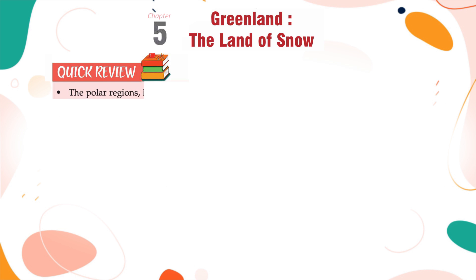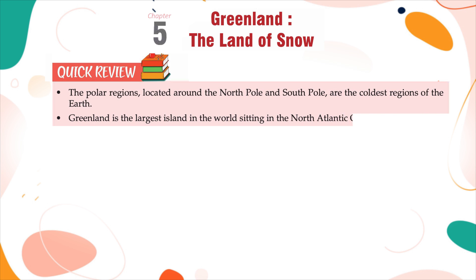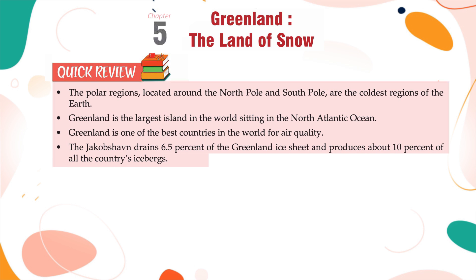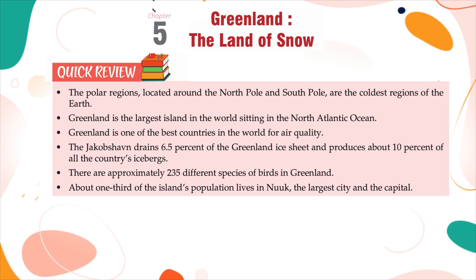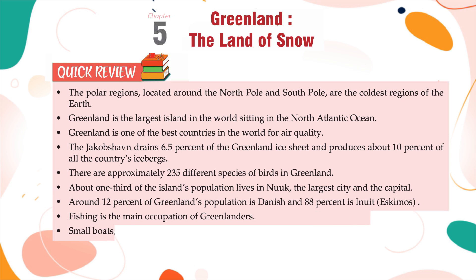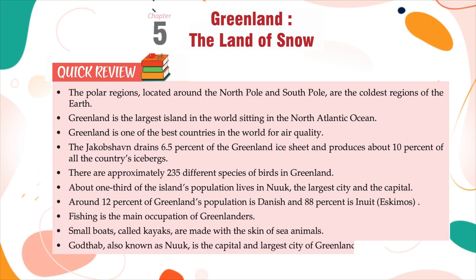Quick Review: The polar regions located around the North Pole and South Pole are the coldest regions of the Earth. Greenland is the largest island in the world, sitting in the North Atlantic Ocean. Greenland is one of the best countries in the world for air quality. The Jakobshavn Glacier drains 6.5% of the Greenland ice sheet and produces about 10% of all the country's icebergs. There are approximately 235 different species of birds in Greenland. About one-third of the island's population lives in Nuuk, the capital. Around 12% of Greenland's population is Danish and 88% is Inuit (Eskimos). Fishing is the main occupation of Greenlanders. Small boats called kayaks are made with the skin of sea animals. Gothab, also known as Nuuk, is the capital and largest city of Greenland.